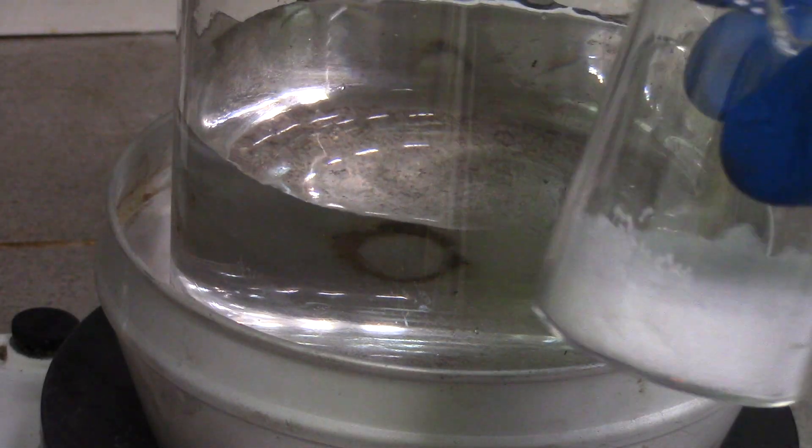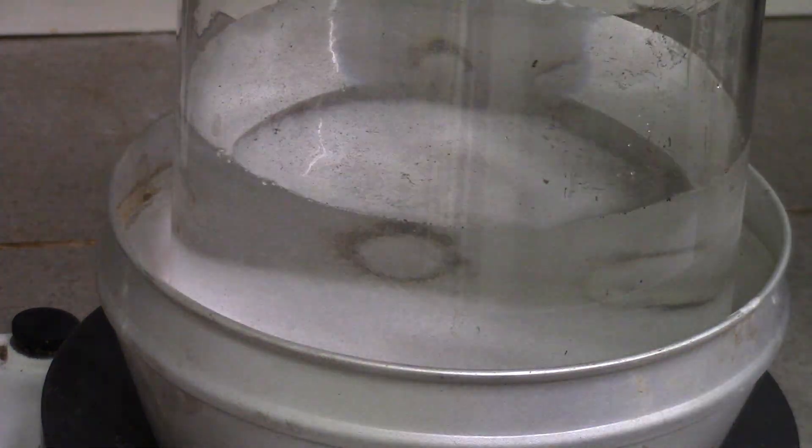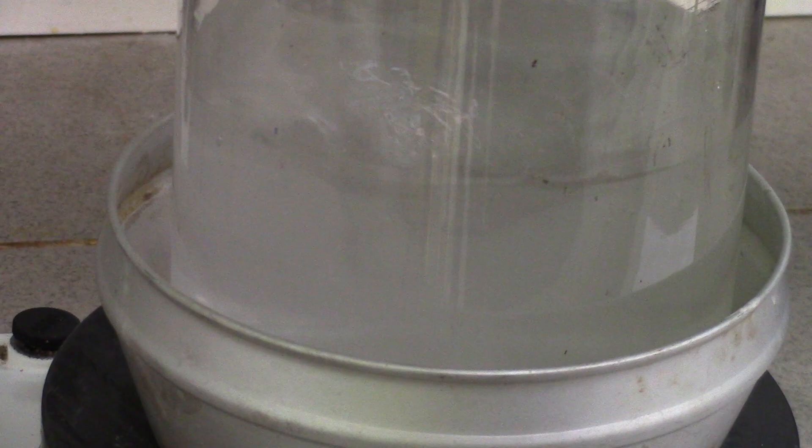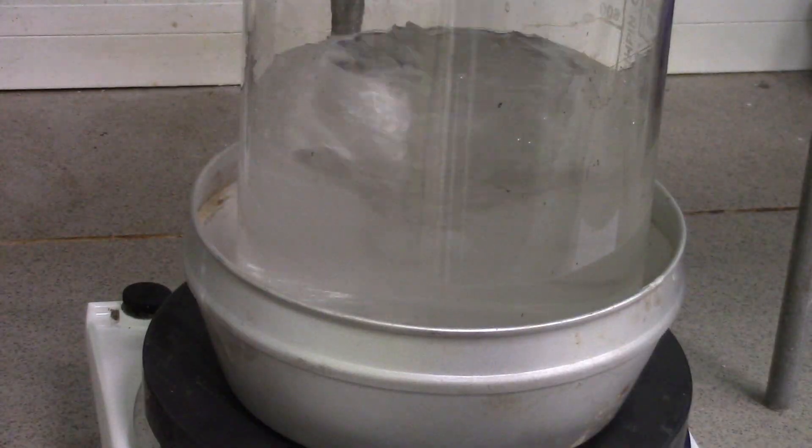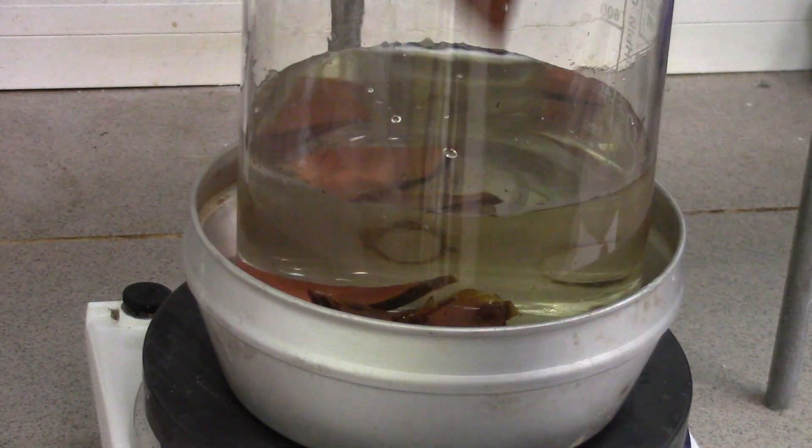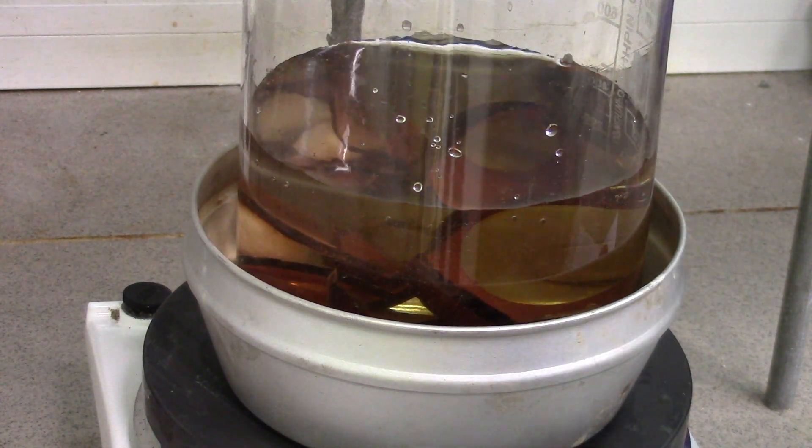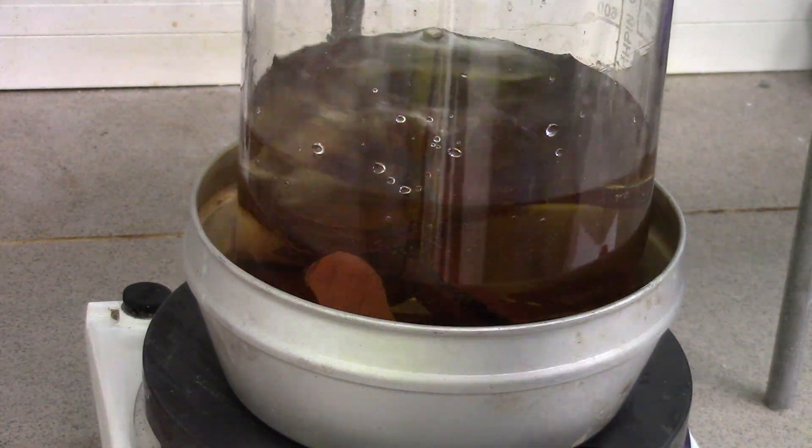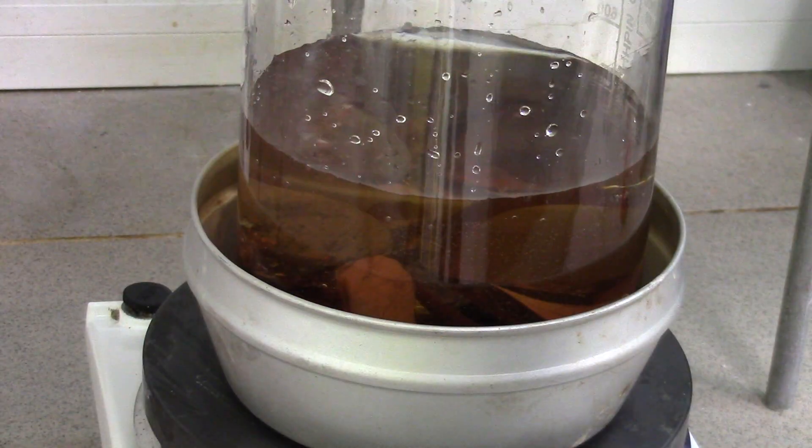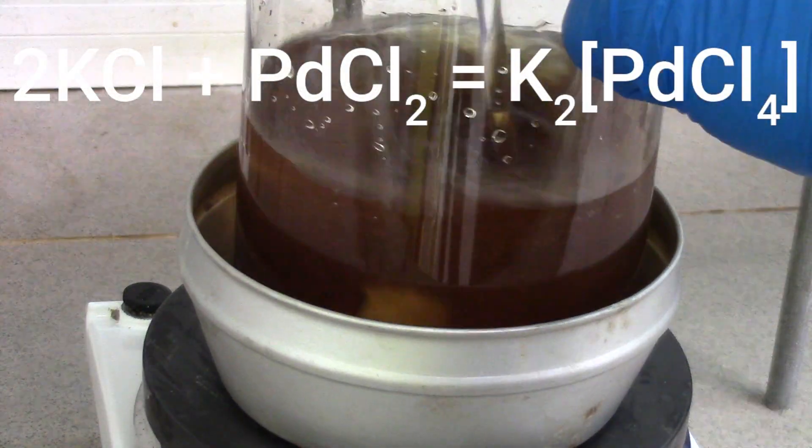I added 15 grams of potassium chloride and stirred it until it completely dissolved. Then I put all pieces of glass container into solution. As you can see, the solution instantly became yellow because of the reaction of potassium tetrachloropalladate formation.